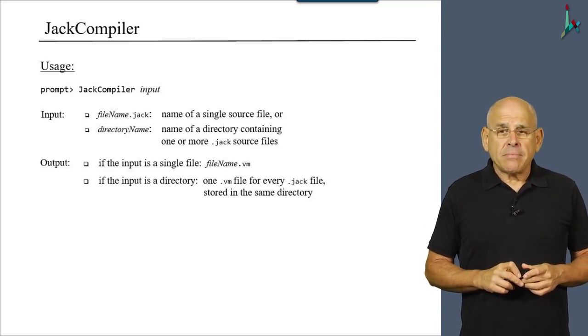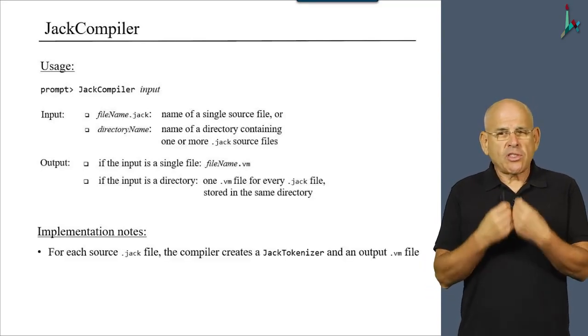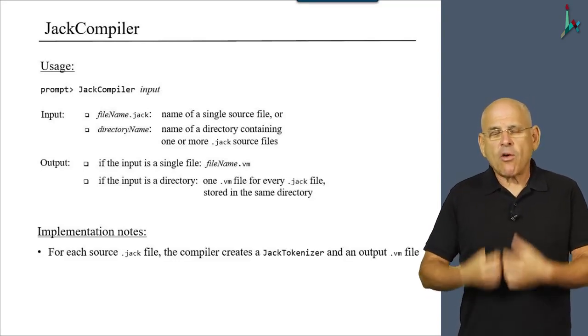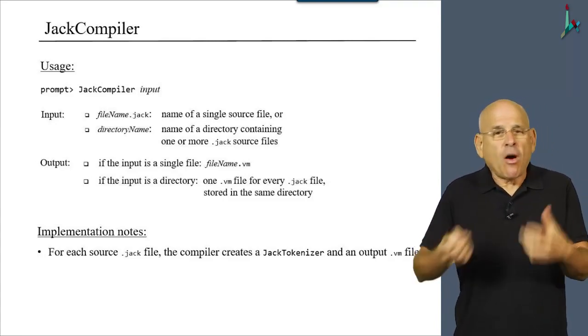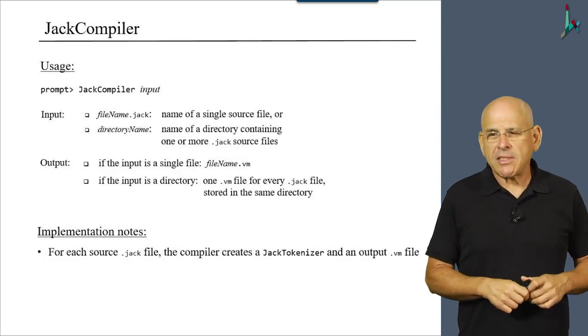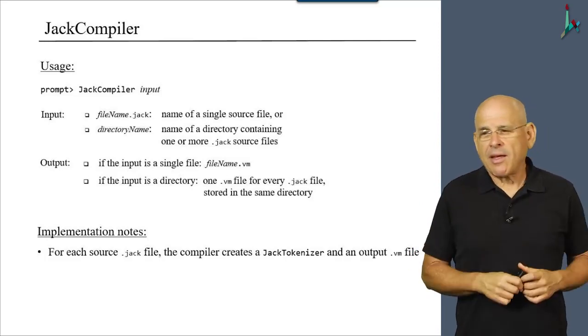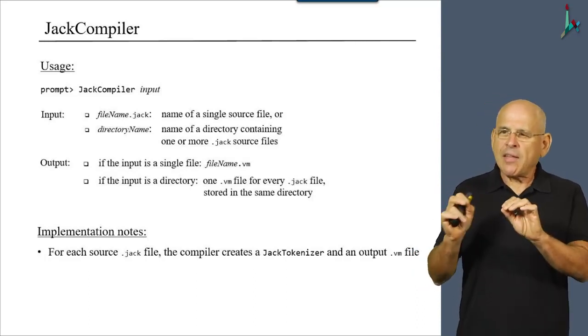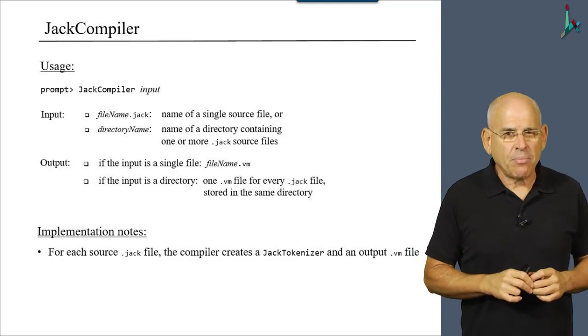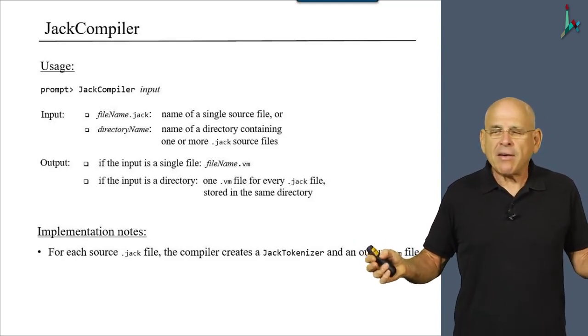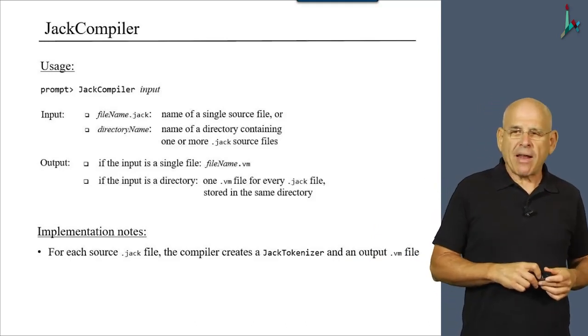And let me say a few words about how it actually works. Well, for each source Jack file, the compiler creates a Jack tokenizer object in order to process the input. And it also creates an output VM file. Now I should say it more accurately. The Jack tokenizer is going to represent the input. So this will be the input of the compiler. And the .vm file is going to be the compiler's output.